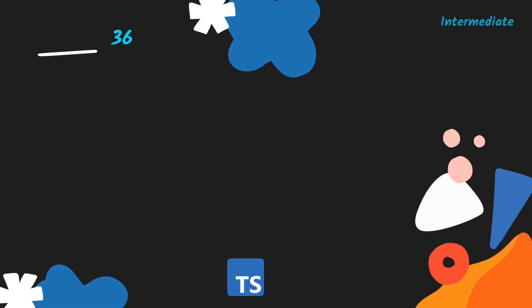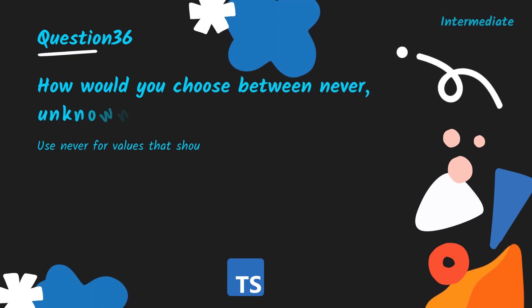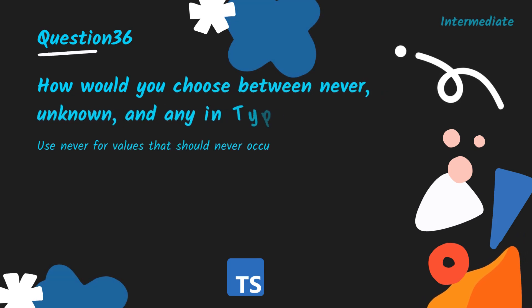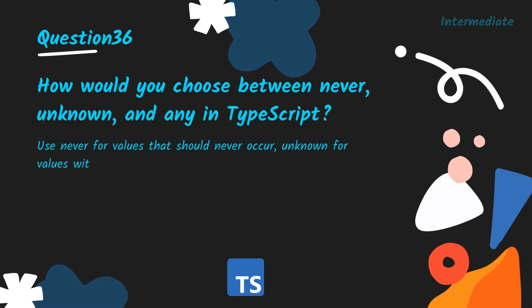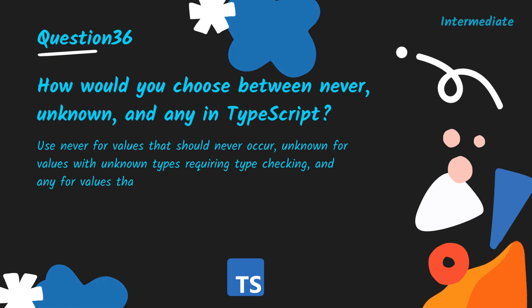How would you choose between never, unknown, and any in TypeScript? Use never for values that should never occur, unknown for values with unknown types requiring type checking, and any for values that bypass type checking.